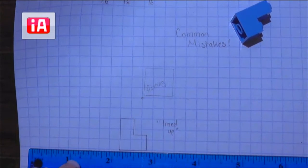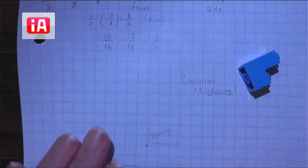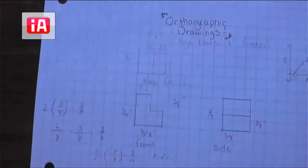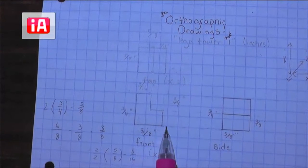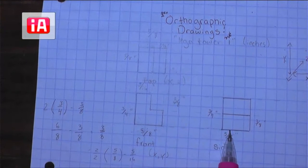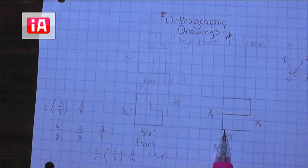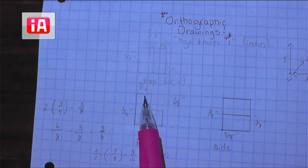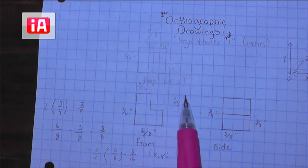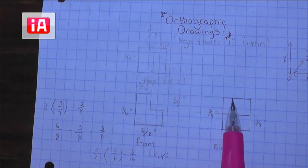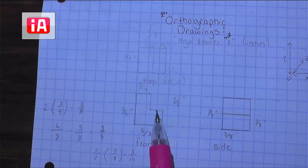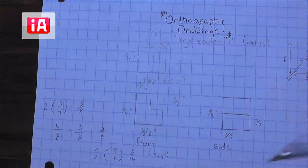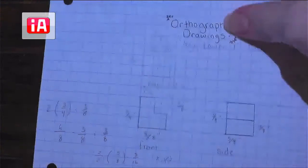So when it is lined up, like we saw in our example, the bottom of our front view is on the same graph paper line as the bottom of our side view. The top of our front view is on the same graph paper line as the top of our side view. And the major changes line up as well. So that's what we want to see. This is good.